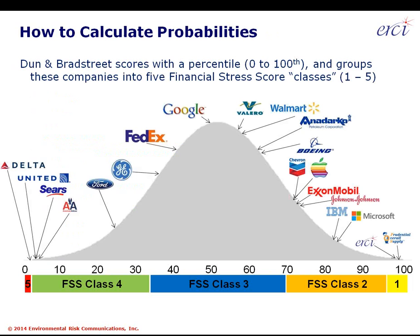Each company has a credit score associated with a financial stress score — similar to an SAT score, ranging from zero to the hundredth percentile — which equates to a financial stress score class, FSS class one through five. The weakest companies are in stress score class five; the healthiest are in stress score class one.